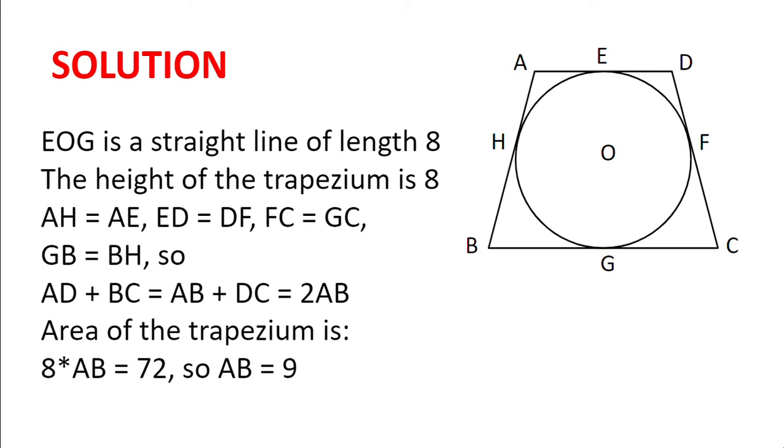Solution. Now, since EOG is the diameter of the circle, it is a straight line of length 8, because the radius of the circle is 4.